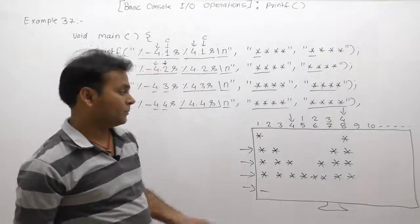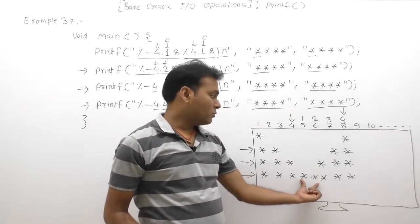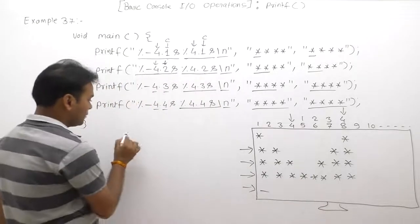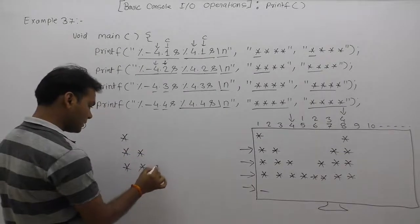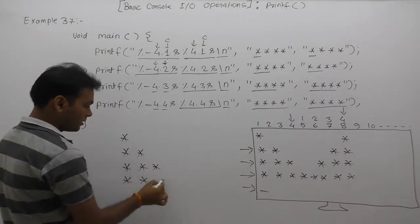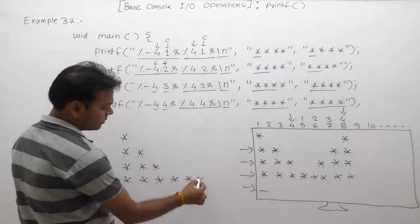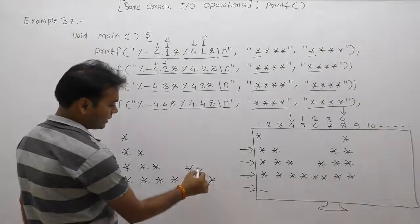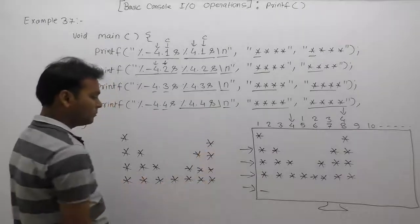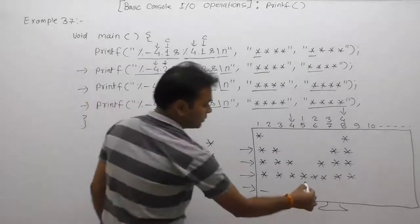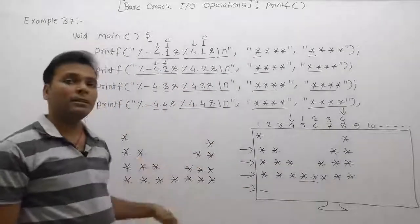This is the final output of the given code. However, we notice that in the middle, stars appear printed twice. If we want an output like star-star-star-star-star-star with only one star in the middle position rather than two, we will demonstrate how to achieve that pattern in the next video.